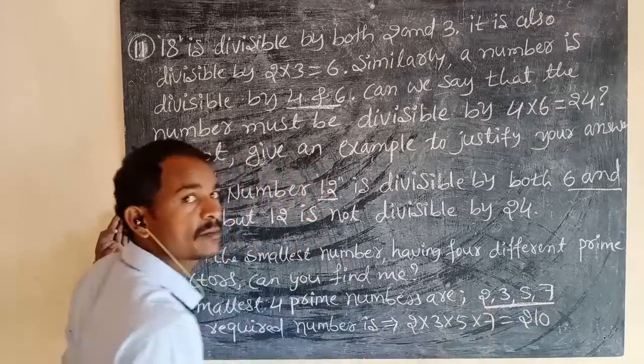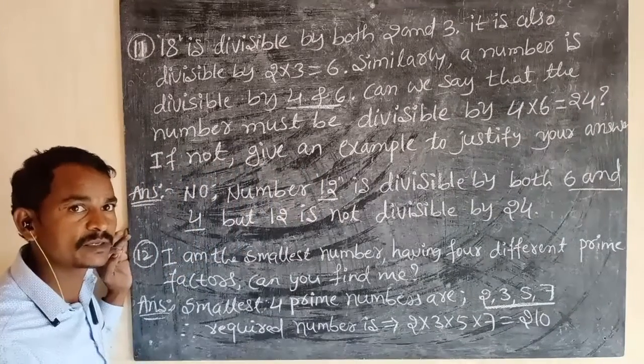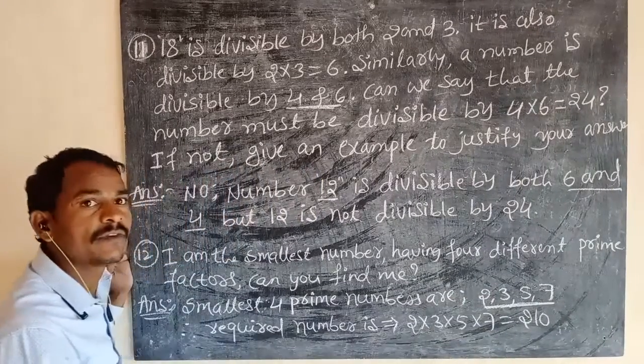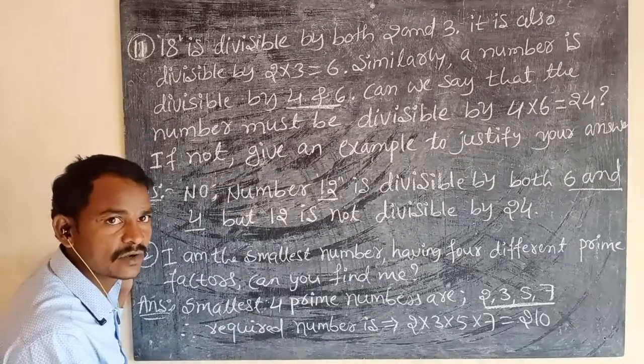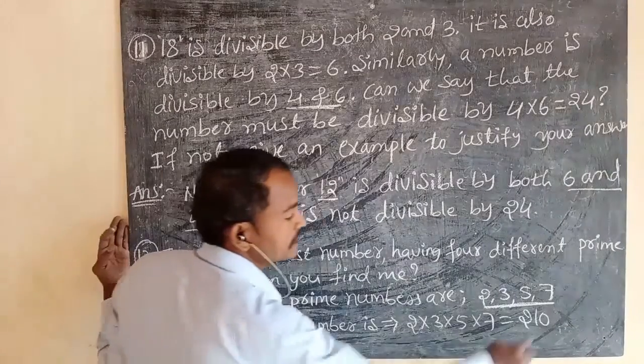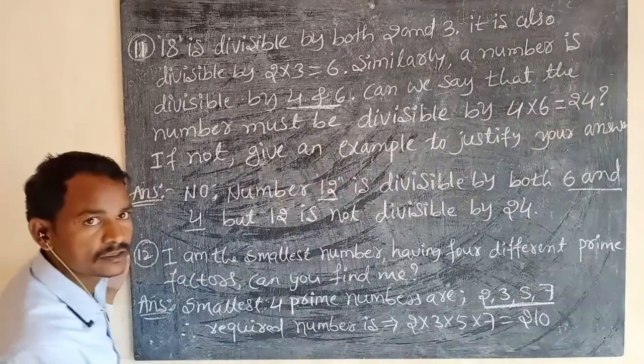Because prime numbers start from 2. The smallest prime number is 2, then 3 is also prime, 5 is also prime, 7 is also prime. These are the smallest 4 prime numbers.